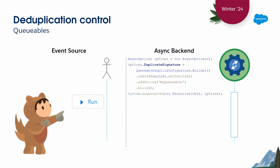We've also got deduplication control, which is new in Winter 24. When you have inbound queueable jobs, they can come from multiple sources - trigger recursion, platform events, or a user enthusiastically pressing a button that doesn't get disabled in the UI. When that user enqueues a job, we've added a new feature called a deduplication signature. You build up a unique signature to represent that job - in this case a string and an ID, or a combination of integers - and enqueue the job with that.